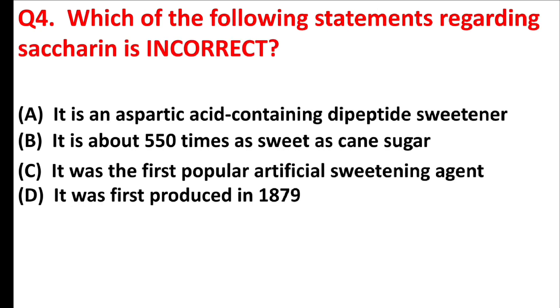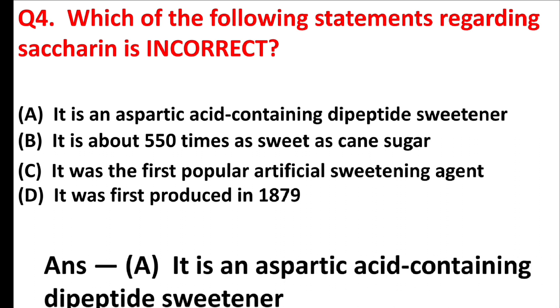Which of the following statements regarding saccharin is incorrect? Answer is Option A: It is an aspartic acid containing D-peptide sweetener.